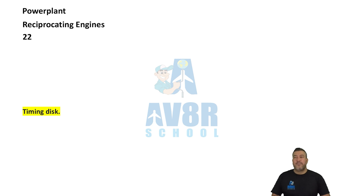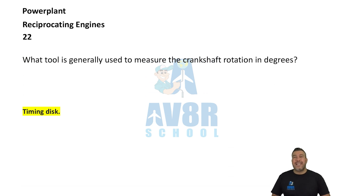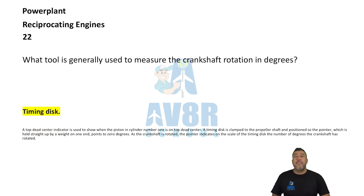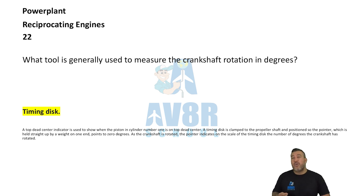Number 22. What tool is generally used to measure the crankshaft rotation in degrees? A timing disc. A timing disc is the tool generally used to measure crankshaft rotation in degrees.